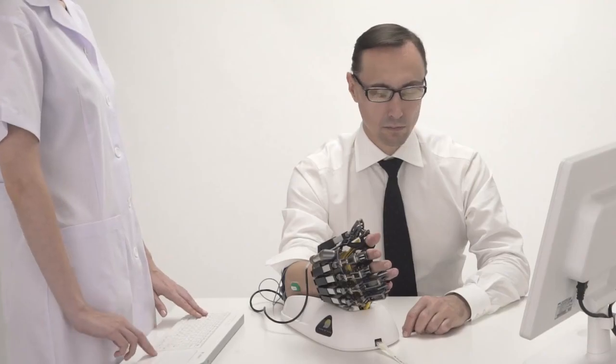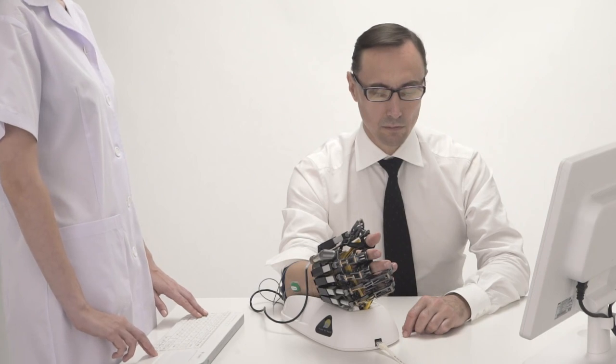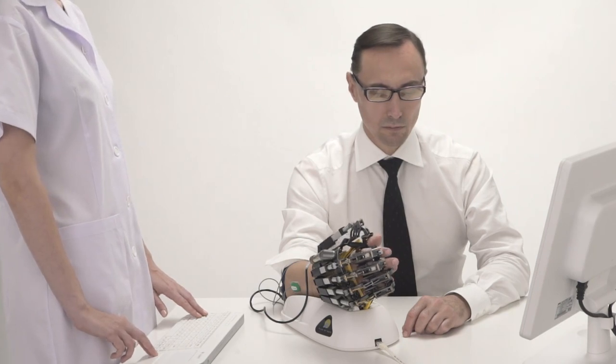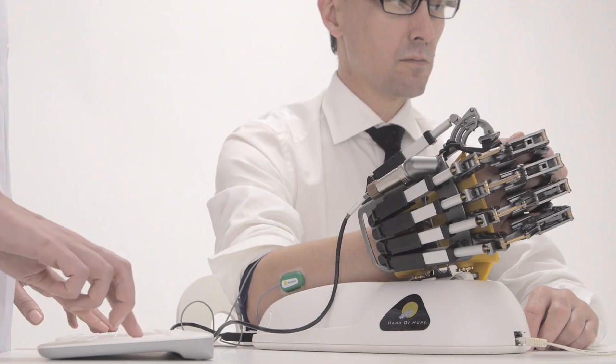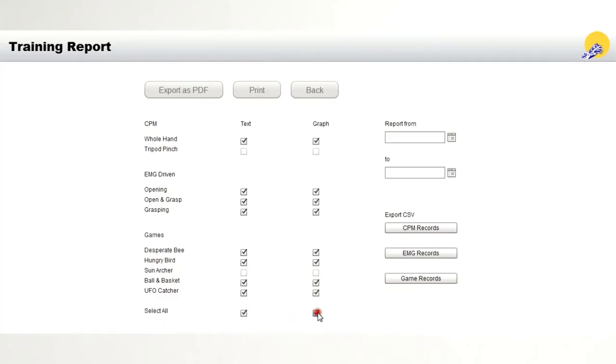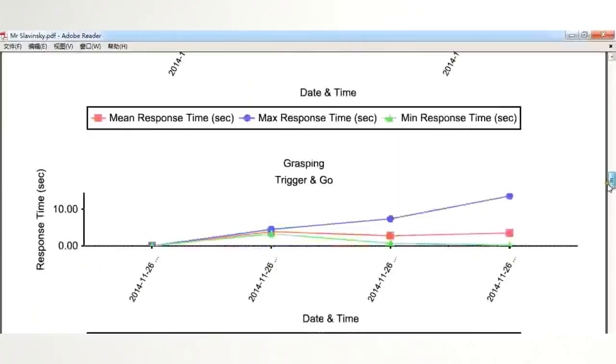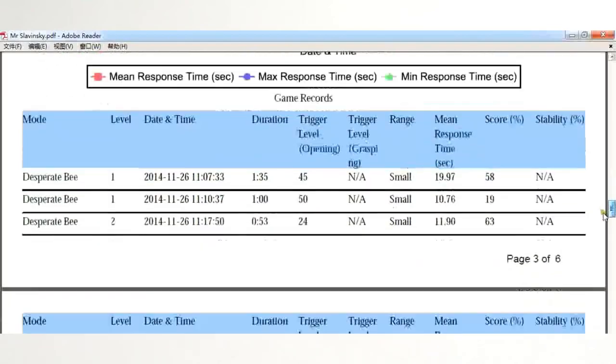Thanks to forearm support, the therapist can use the Hand of Hope for home arm recovery at different stages of rehabilitation. Also, therapists can easily extract the report on patients' performances in PDF or Excel file.